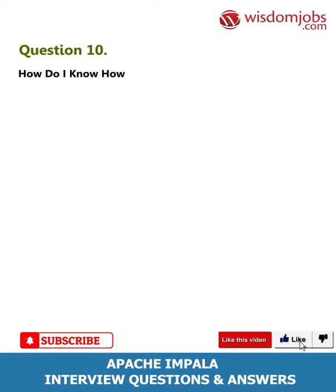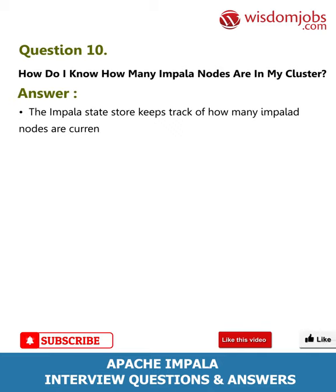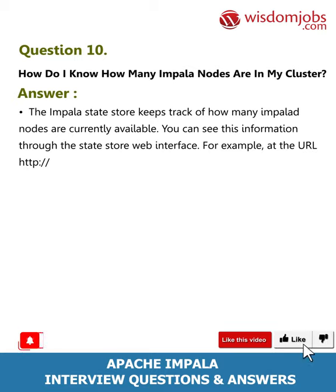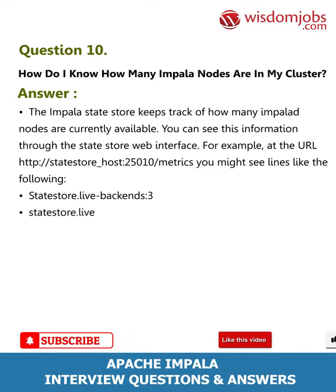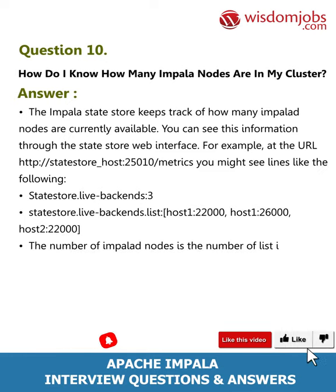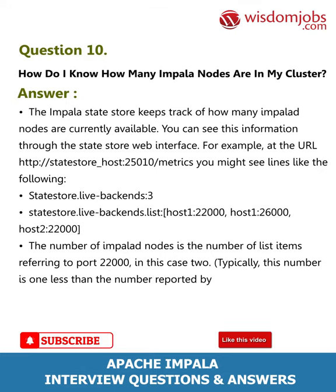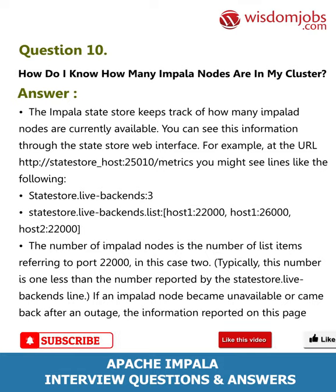Question 10: How do I know how many Impala nodes are in my cluster? The Impala StateStore keeps track of how many Impala nodes are currently available. You can see this information through the StateStore web interface, for example at the URL http://statestore_host:25010/metrics. You might see lines like: statestore.live_backends: 3, followed by a list of hosts. The number of Impala nodes is the number of list items referring to port 22000 — typically one less than the number reported by the live_backends line. If a node became unavailable or came back after an outage, the information on this page would change appropriately.